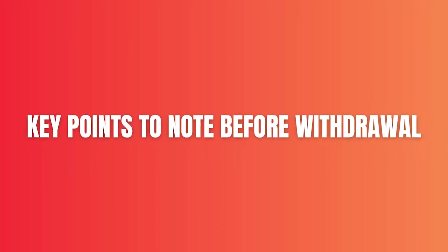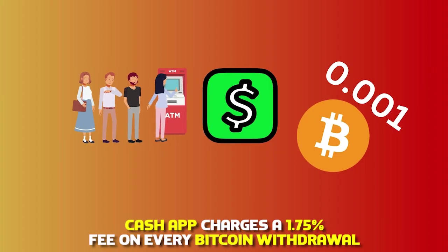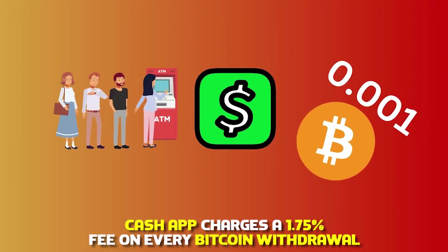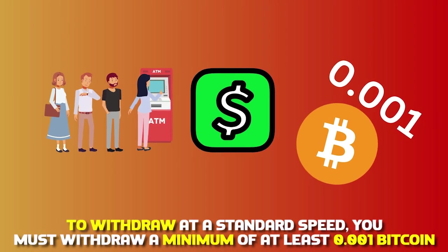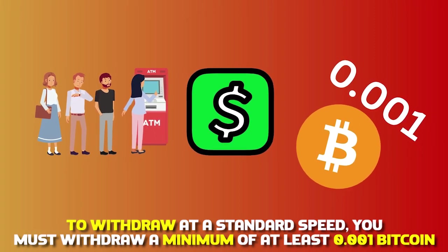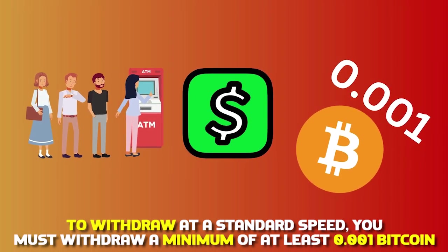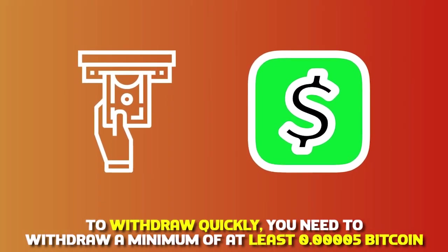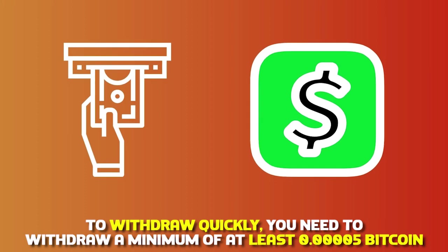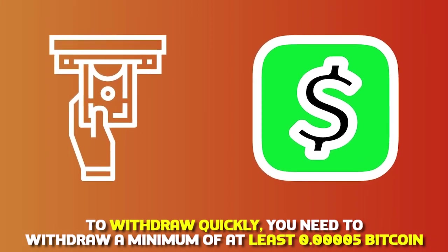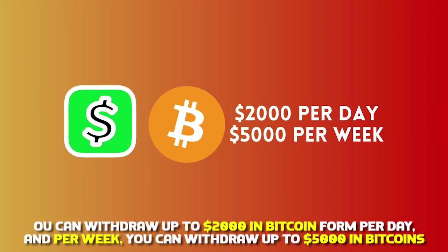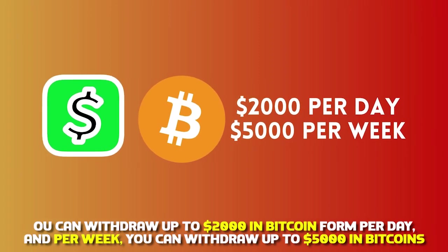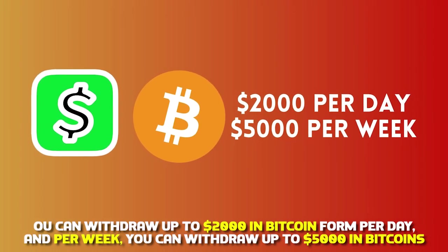Key points to note before withdrawal: Cash App charges a 1.75% fee on every Bitcoin withdrawal. To withdraw at a standard speed, you must withdraw a minimum of at least 0.001 Bitcoin. To withdraw quickly, you need to withdraw a minimum of at least 0.00005 Bitcoin. You can withdraw up to $2,000 in Bitcoin per day, and per week you can withdraw up to $5,000 in Bitcoin.